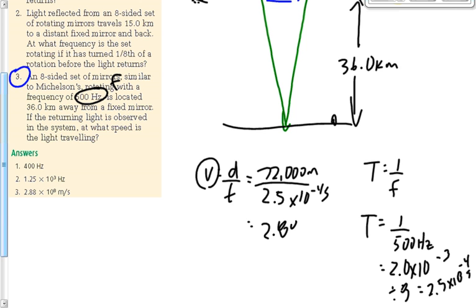And we get 2.88 times 10 to the 8. Which you can see is a really good speed, a really good measurement for the speed of light. 2.88 times 10 to the 8 meters per second. Is that okay?